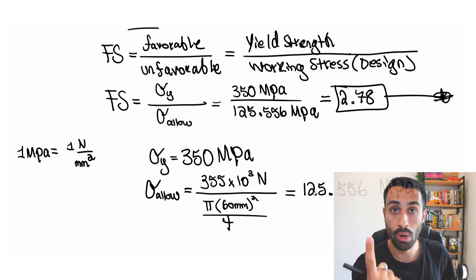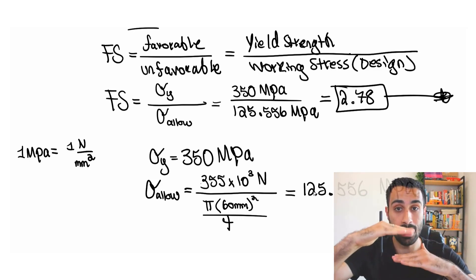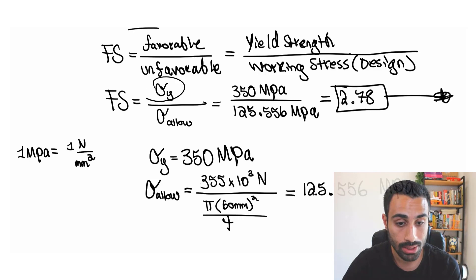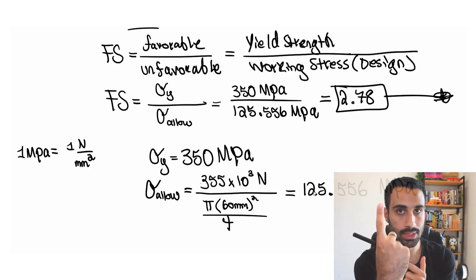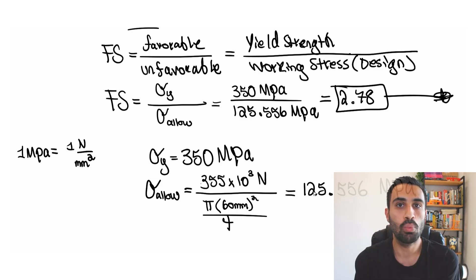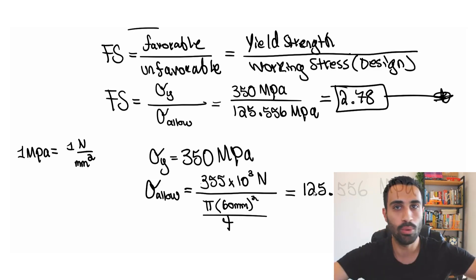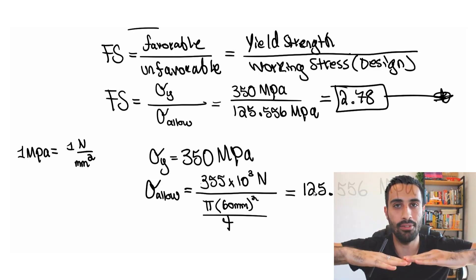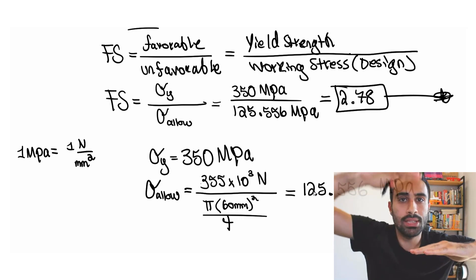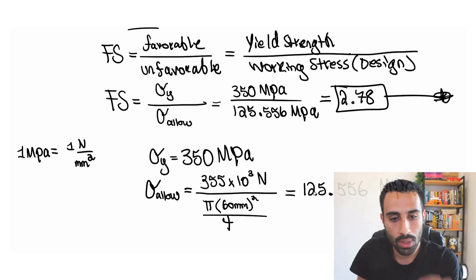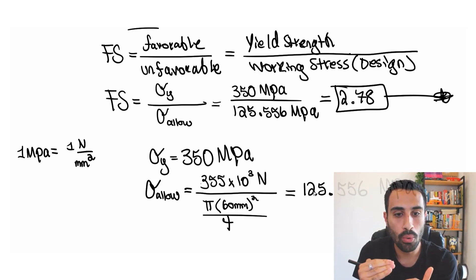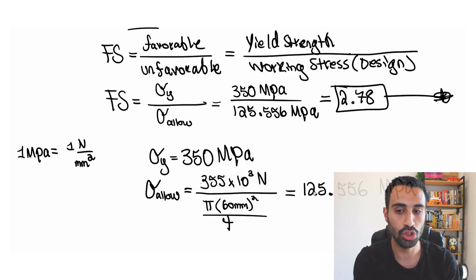This means the design stress acting on the rod is safely below the yield stress threshold. If the factor of safety were 1, the working stress would equal the yield stress — right at the failure limit, which we do not want. We want a factor well above 1 to ensure we're safely below the maximum yield strength. The answer is a factor of safety of 2.78.